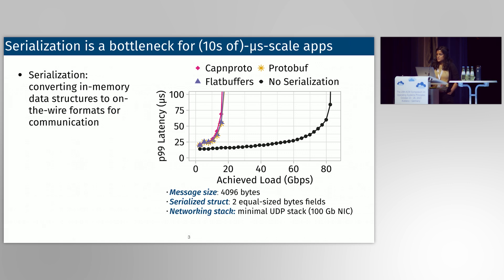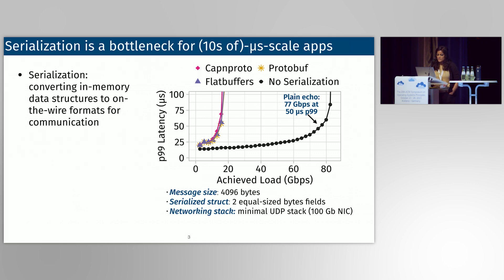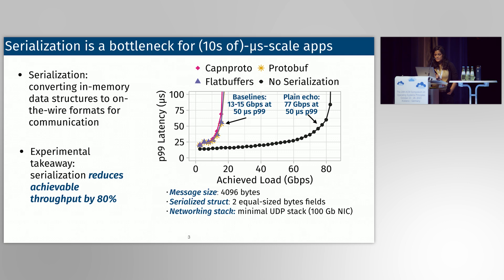The application takes in a packet, deserializes it to a struct, re-serializes the same struct, and sends it back out. We compare it to a baseline that doesn't do any serialization or deserialization, just echoing the packet. Looking at achieved load against tail latency, this baseline achieves about 77 gigabits per second at 50 microseconds. Adding serialization reduces throughput by about 80%, to 13 to 15 gigabits per second.